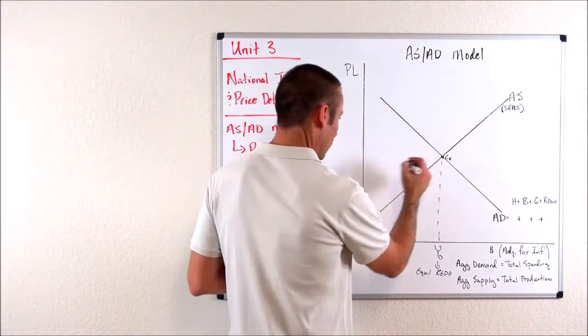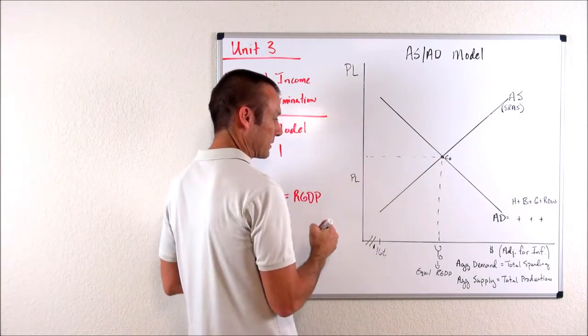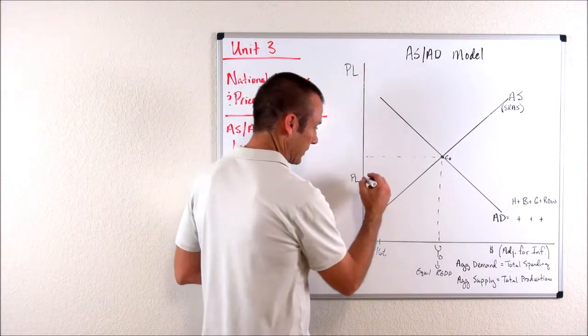If the price level was, let's say, not right here, but down here, so I'll put a price level right there, and I'll just put a zero for right now. If I draw that across, at that price level,